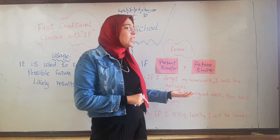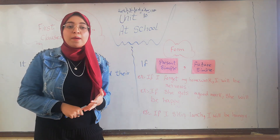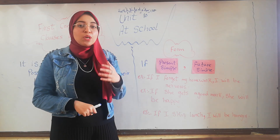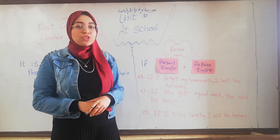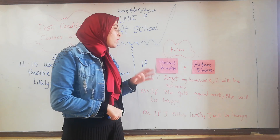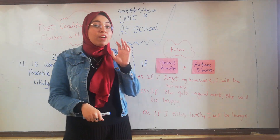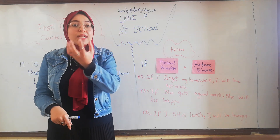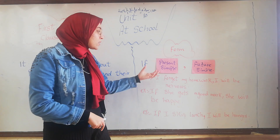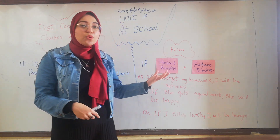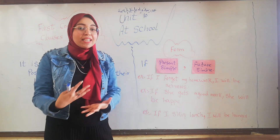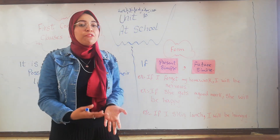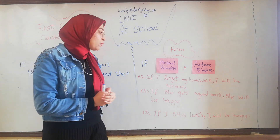What is the meaning of future simple? Future simple means something will happen in the future. The form of future simple is: will + verb in its base form. So present simple is for daily routine, and future simple is for something that will happen in the future.